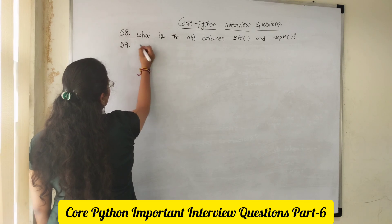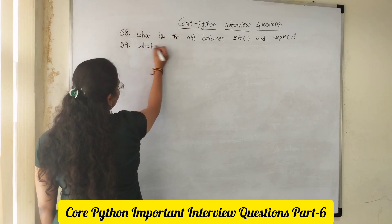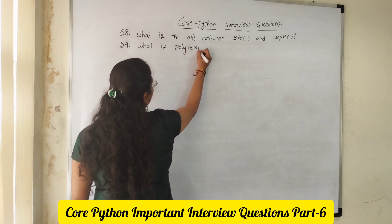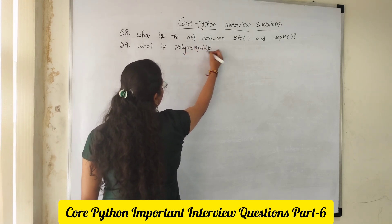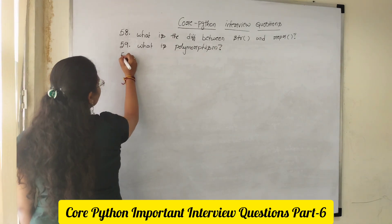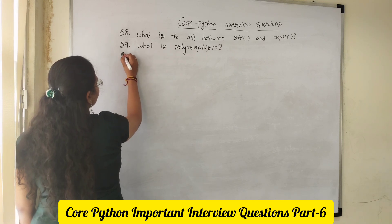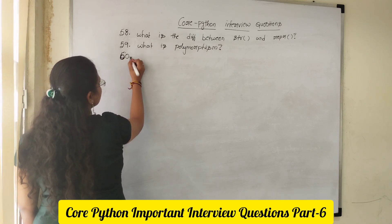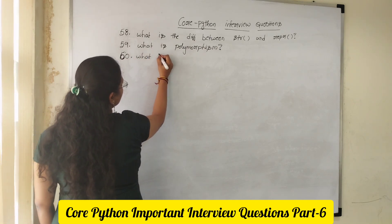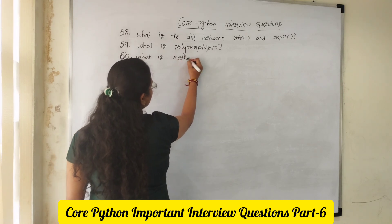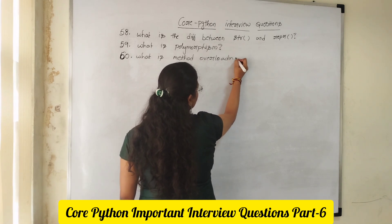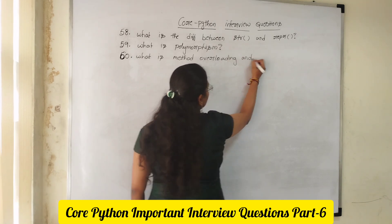Question 59: What is polymorphism? You need to explain polymorphism with a real-time example. Question 60: What is method overloading and what is method overriding?